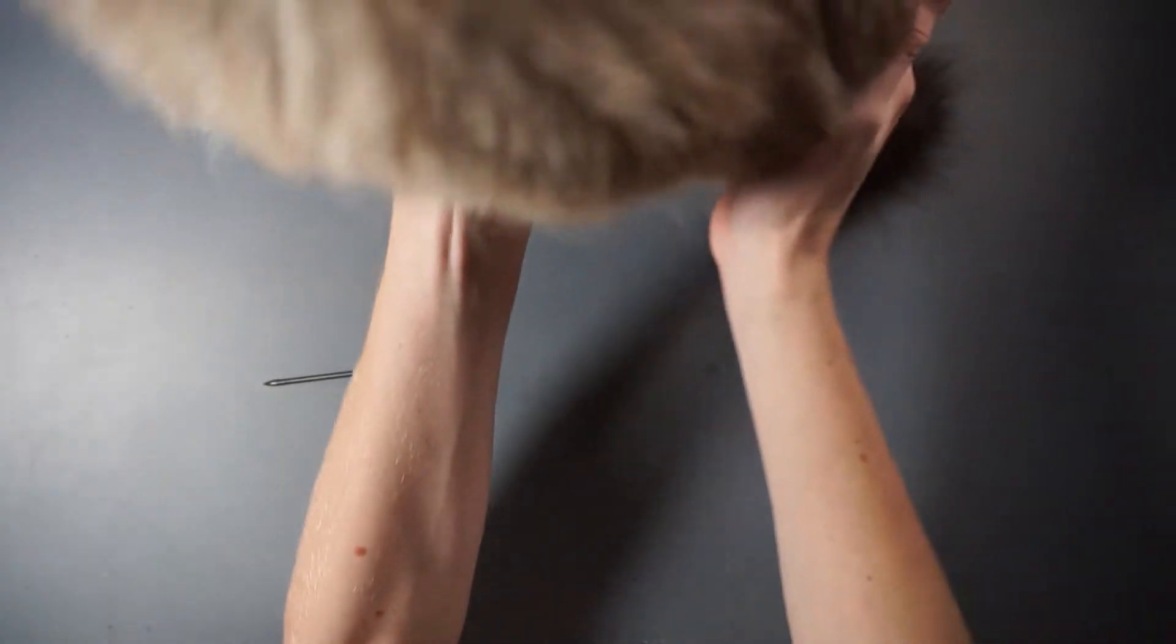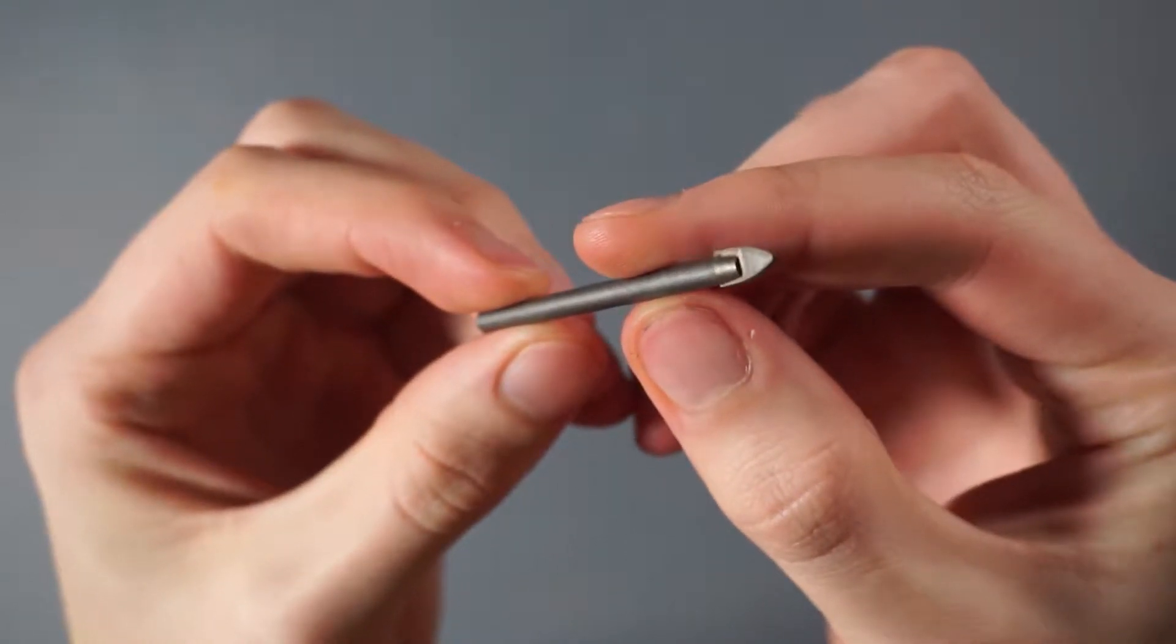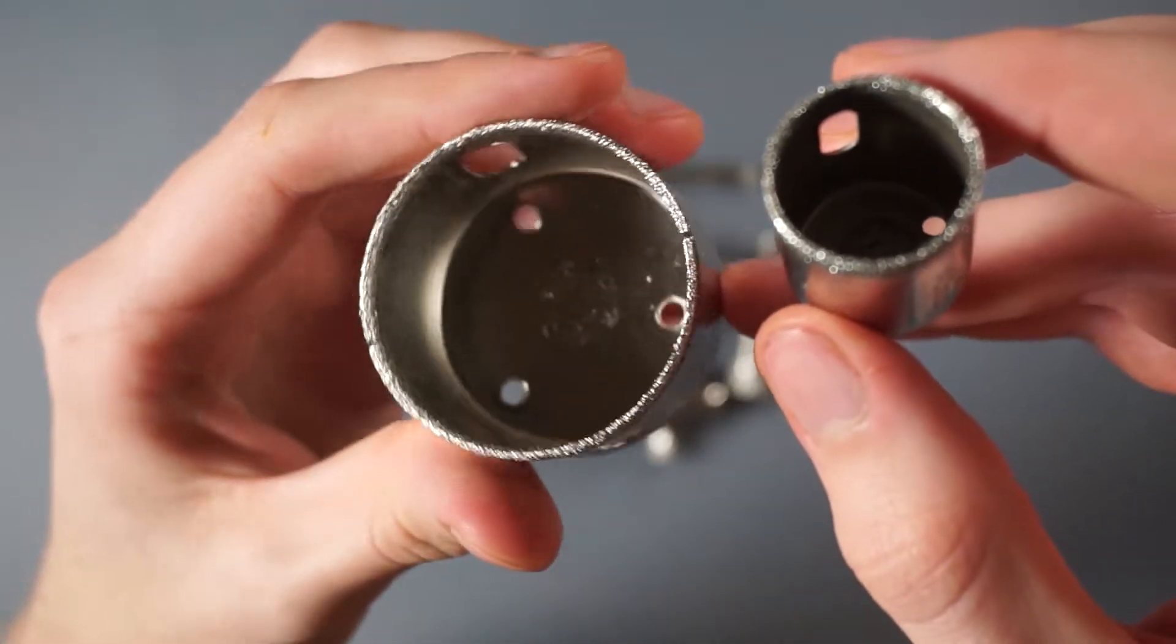Hi, today we are going to see how to drill glass. For smaller holes you can use this type of drill, and to make bigger holes you can use these type of drill bits that have a diamond edge.